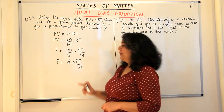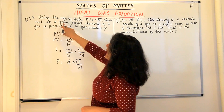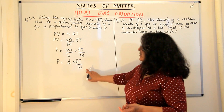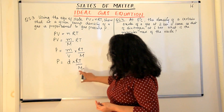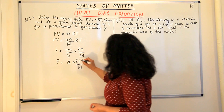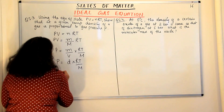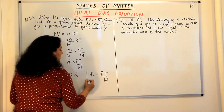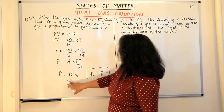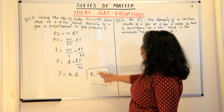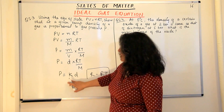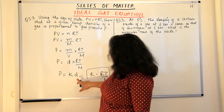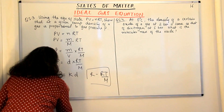Now R is the universal gas constant. T is the temperature, and the question says to show that at a given temperature — which means temperature is constant — and the molar mass of any substance is also constant. So RT upon M, if you look at this, is constant. Since RT/M is constant, you can write this as P = KD, where K stands for RT/M, and K is a constant. So P = KD, where K, which equals RT/M, is constant. Removing the constant of proportionality, the pressure would depend on D, so pressure is directly proportional to D.